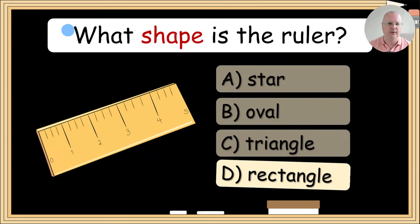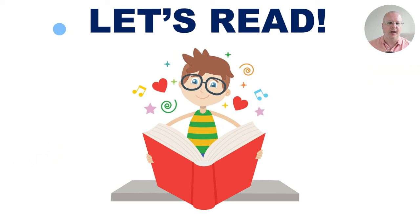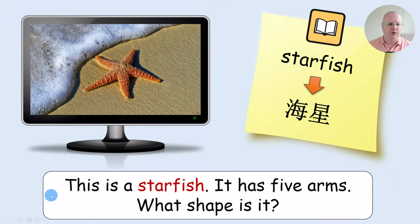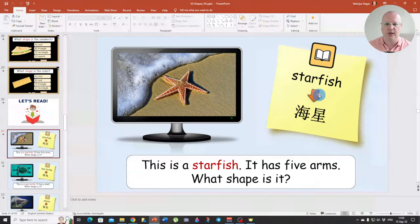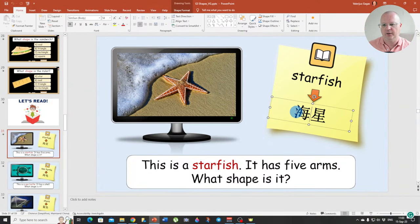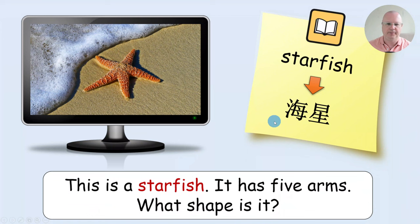Now we're going to read. It's a simple text. This is a starfish — it has five arms. What shape is it? I have included a translation; I teach in China, so I translate everything into Chinese. But it's very easy to change it into the language you are teaching — you just click on the box and translate it into the students' L1.